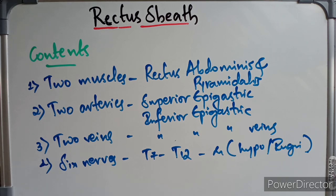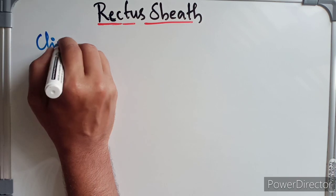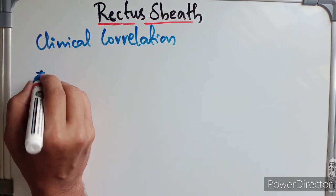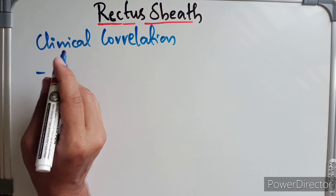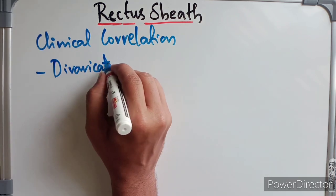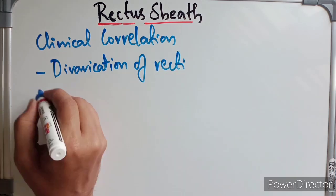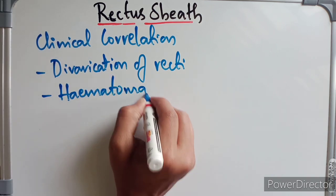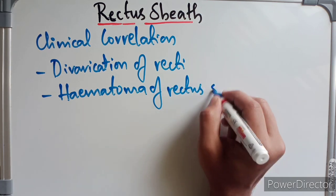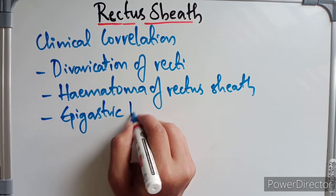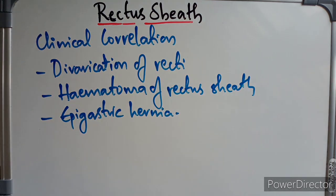Lastly, coming to the clinical correlation of the rectus sheath. We are going to discuss three conditions: diastasis recti (diverrication of recti), hematoma of the rectus sheath, and epigastric hernia.